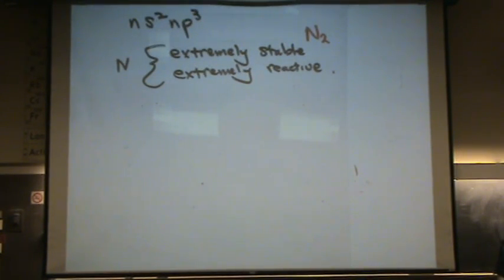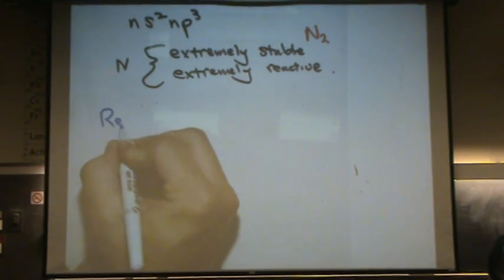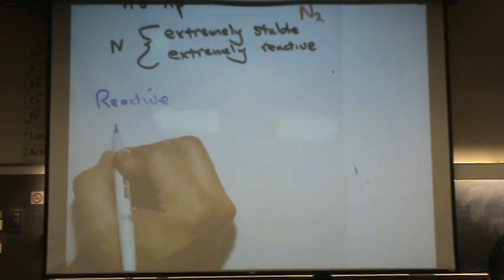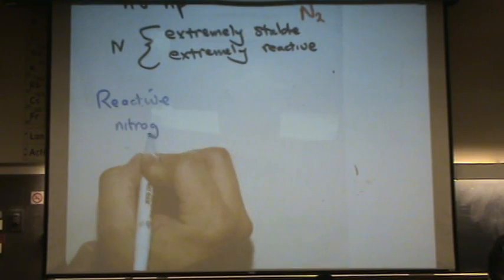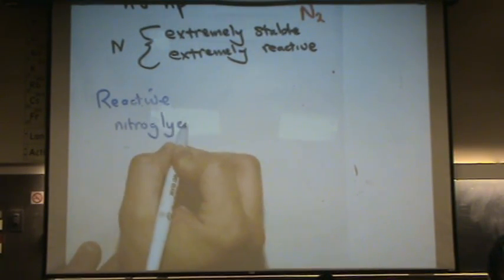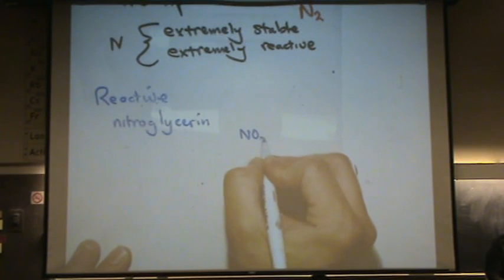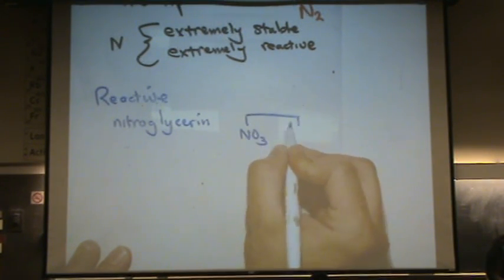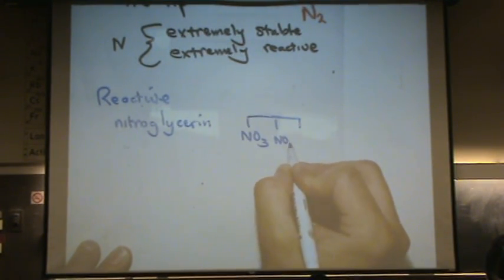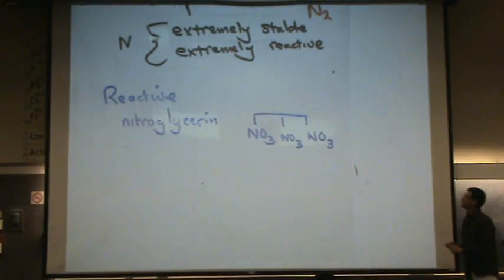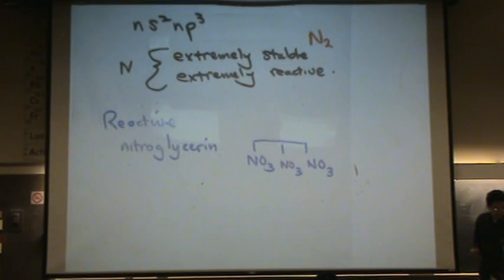So that's stable. Let's do some of the reactive ones. Reactive. You might have heard of nitroglycerin. Nitroglycerin looks like this. There's obviously a lot of nitrogens on it. Three. And three NO3 groups. Those are called nitro groups. NO3.